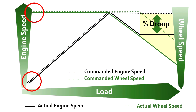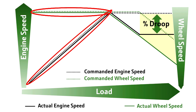Starting at the left with a light load, the tractor will shift up and throttle back to a low engine speed while maintaining a constant wheel speed. As the load on the tractor increases, the tractor will compensate by increasing the engine speed and downshifting the transmission while maintaining the constant commanded wheel speed.